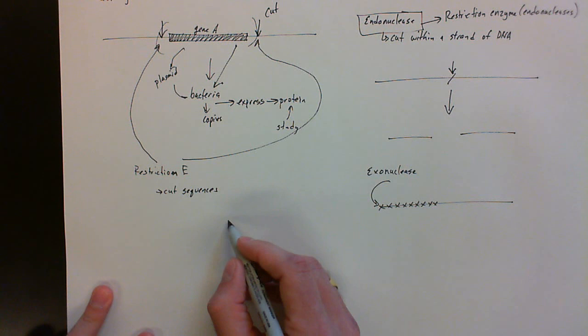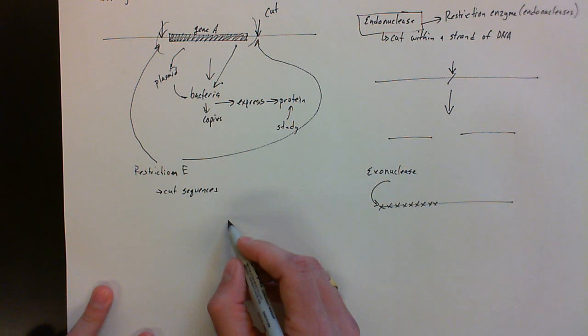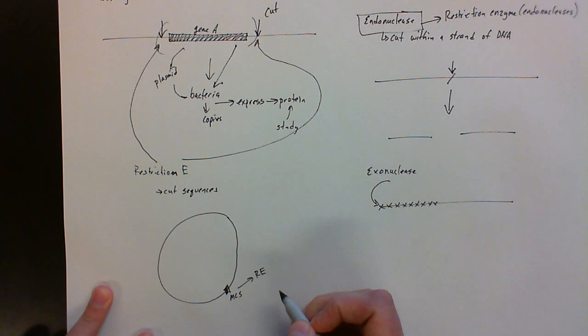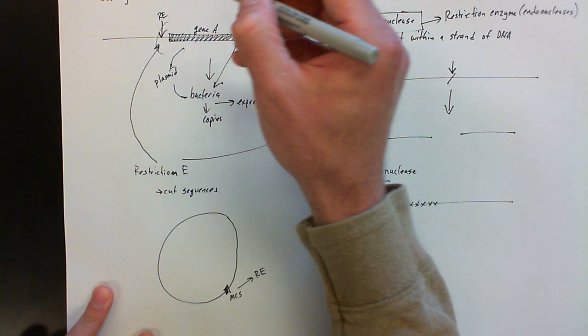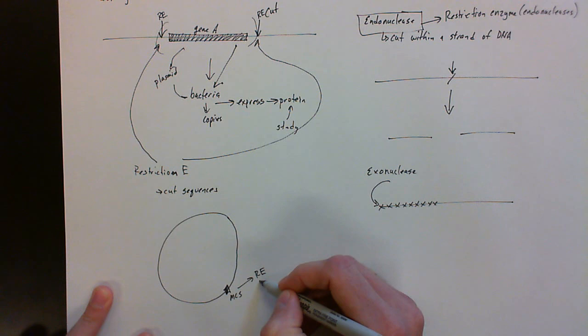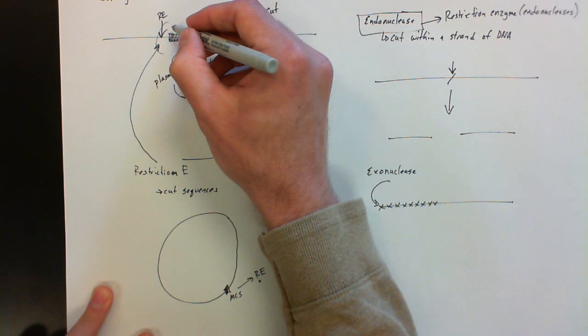And based on what we know about plasmids, if you remember or look at my video, there's a multiple cloning site, remember the MCS. And these are filled with restriction enzyme sites or restriction endonuclease sites. So as long as I find restriction enzymes that flank my gene and that match up with my multiple cloning site, I can pop that gene out here and insert it into the multiple cloning site.